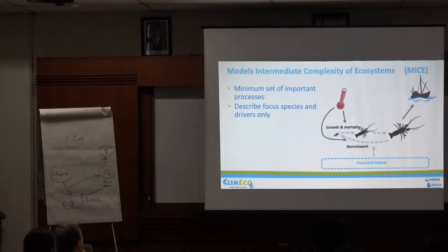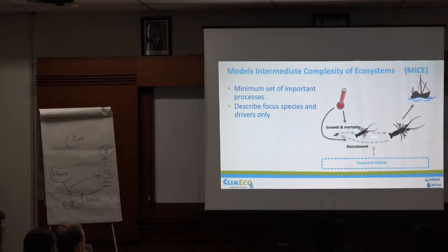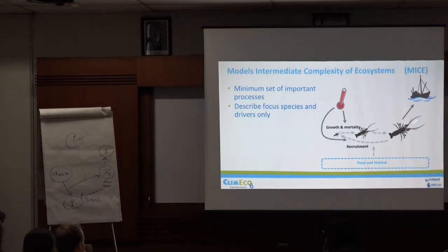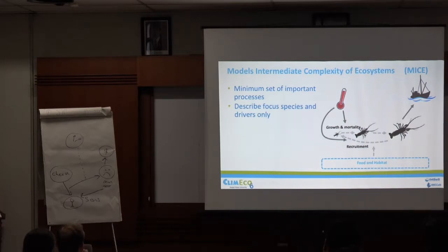Another common approach is models of intermediate complexity, where you pull out the key influences. You have the species of interest and its life history, with temperature affecting growth and mortality — in this case a lobster. It has a very basic representation of food and habitat, with most of the detail in the key processes. Fishing components are very closely fit to data, and the output can be fed directly into the stock assessment management world.